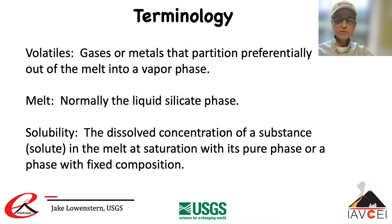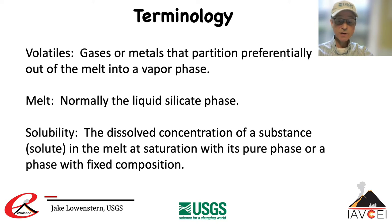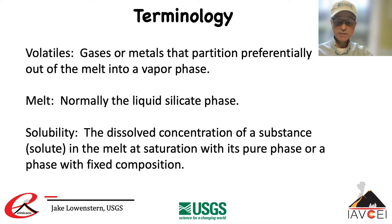First, let's introduce the relevant terms. By volatiles, we're referring to those gases or metals that tend to partition out of the melt and into any vapor phase that might be present. By melt, we're referring to silicate melt, since silicate melts dominate at nearly all volcanoes. By solubility, we're referring to the concentration of a gas in the melt at the point of saturation with a specific phase of fixed composition. For example, for water, we're referring to the concentration of H2O in a silicate melt saturated with pure water or steam — but things do get more complicated.